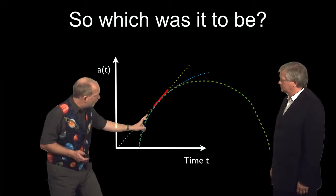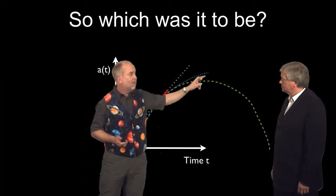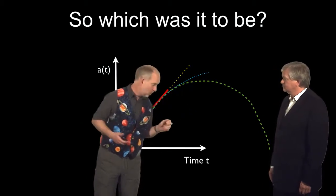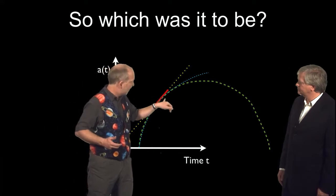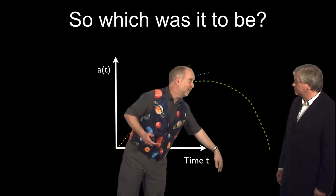Is it only going to slow things down a little bit, like the blue line here? So we'll keep on expanding, but slow down, but never stop? Or is it going to be a much more violent universe where it expands, expands, we're still here, then turns around and comes back down together again?